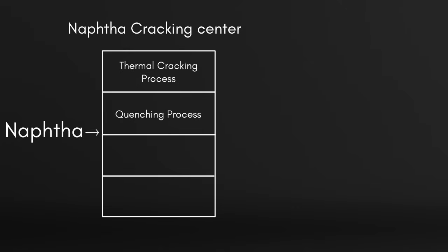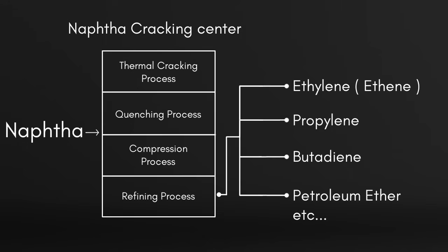In the quenching process, naphtha is broken down into hydrocarbons. Then it is compressed and refined. We get ethane, propylene, butadiene, petroleum ether, etc. By this process, we made our important product in plastic production, that is ethane.